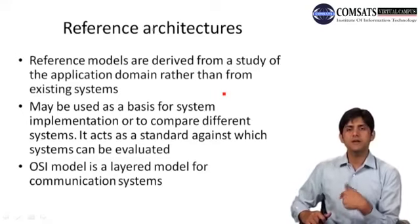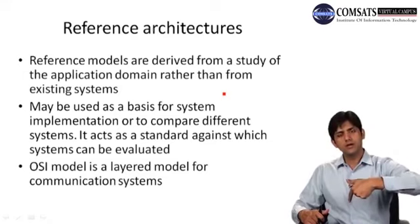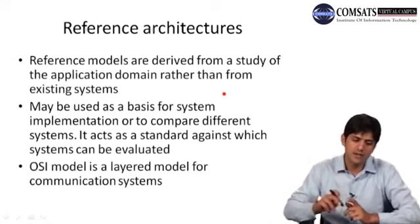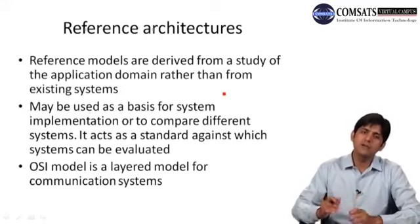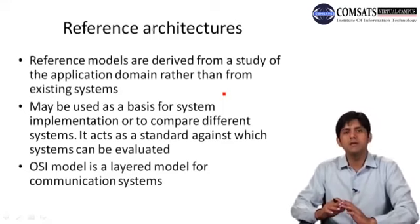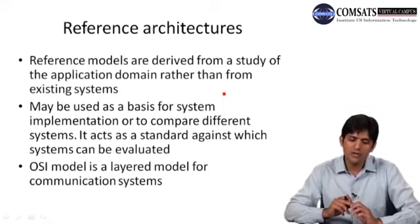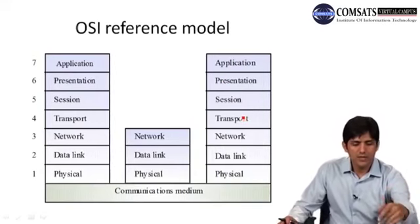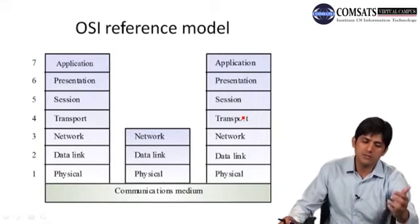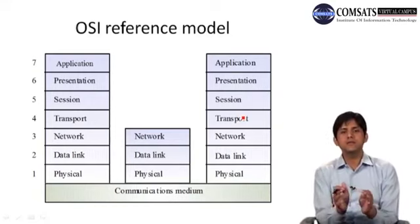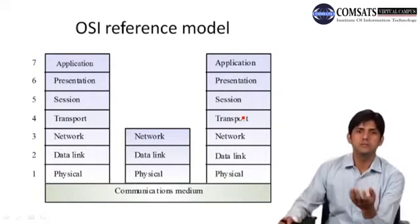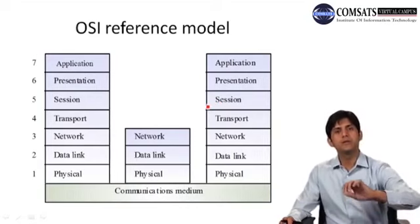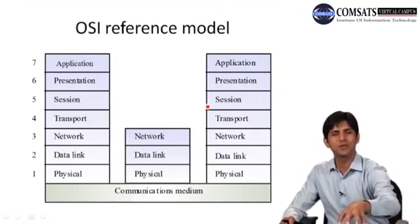Reference architectures are derived from a study of the application domain rather than from existing systems. This is the key difference — generic models are produced by looking at different instances (different applications), whereas reference models follow a top-down approach studying the application domain. The OSI model is a layered reference model for communication systems — it has a physical layer, data link, network, transport, session, presentation, and application layers. This OSI reference model was created by studying the communication systems application domain, so whatever communication system we use, we can apply this reference model.